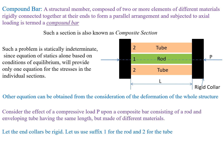Consider the effect of a compressive load P upon a composite bar consisting of a rod and an enveloping tube having the same length but made of different materials. We are applying the compressive load P on the composite bar. Both the tube and rod have the same length. The ends are rigid collars. We use suffix 1 for the rod and suffix 2 for the tube.